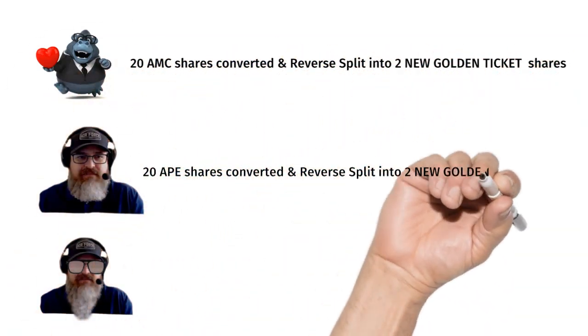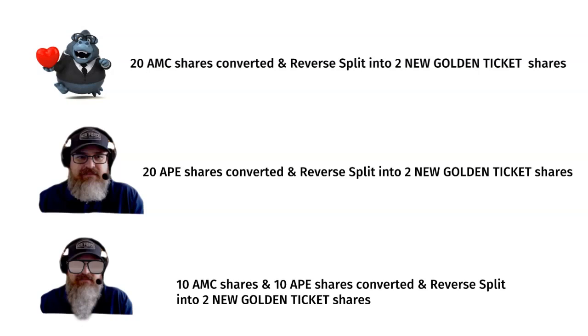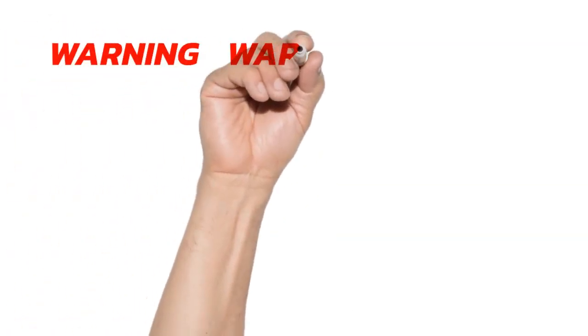Please keep in mind that it does not matter that Ape had almost twice as many shares in circulation than AMC at the time of conversion. The 8K clearly and specifically states that the old Ape and AMC shares will convert on a one-to-one basis to this new share we are calling the Golden Ticket. This is the most controversial part of this process.